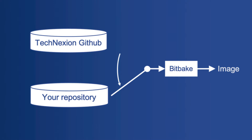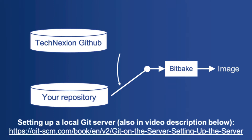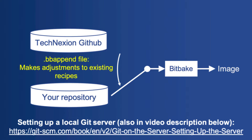In this case, our custom repo is going to sit on my machine here — I've set up a local Git server. In case you're wondering how to do that, here's a great article showing you how to get started. Architecturally, we don't have to modify the original recipe for U-Boot if all we want to do is switch the source code location.